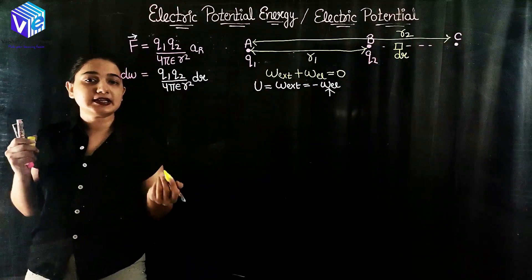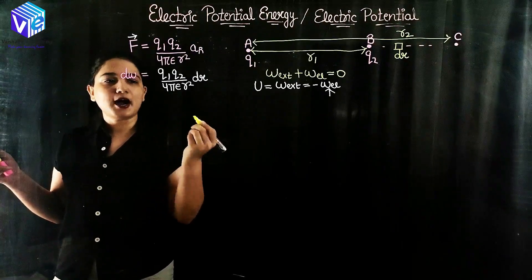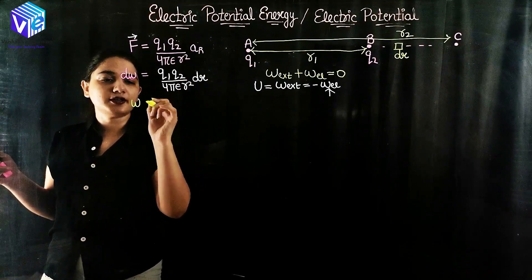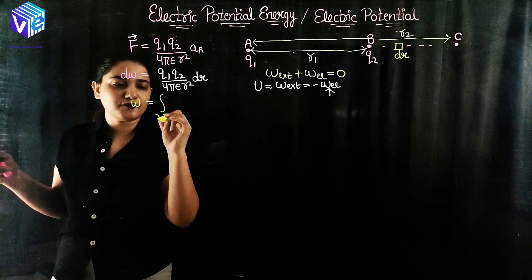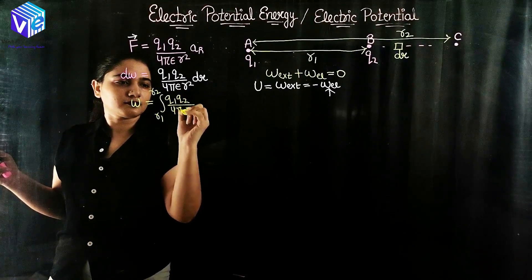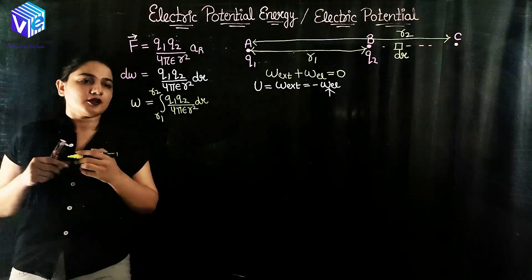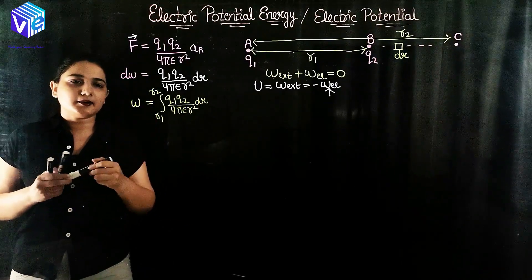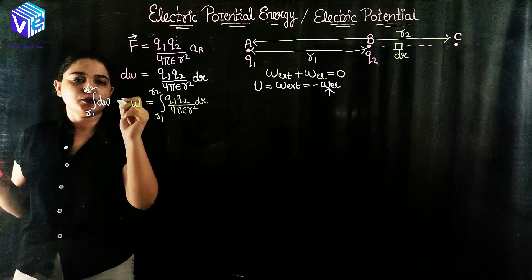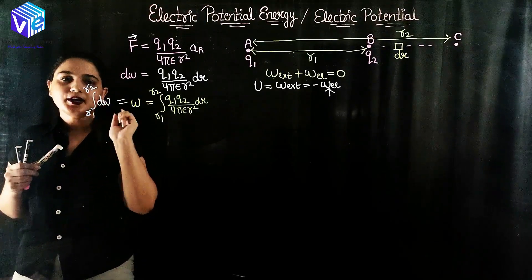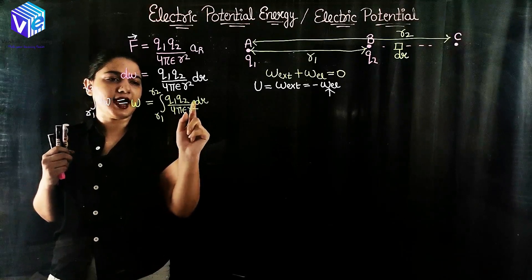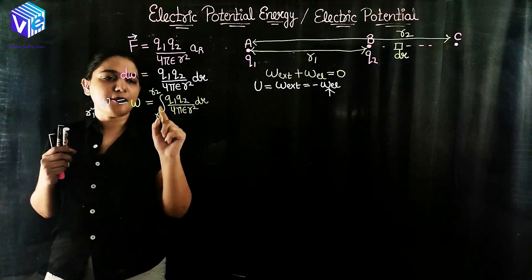I need to find out the total work done from moving the charge from R1 to R2, or from B to C, increasing the distance from R1 to R2. The total work done W equals the integration of dW from R1 to R2. Putting the value of dW — which is Q1·Q2 upon 4πε·r² — and integrating with limits R1 to R2.